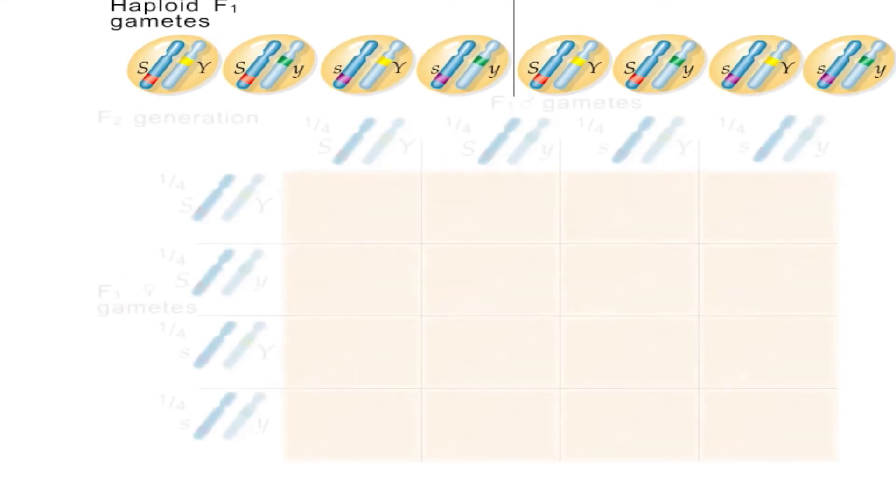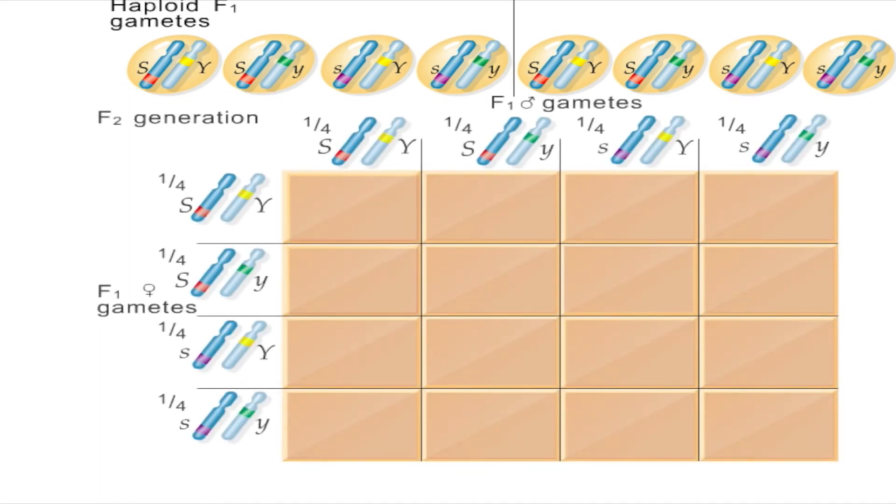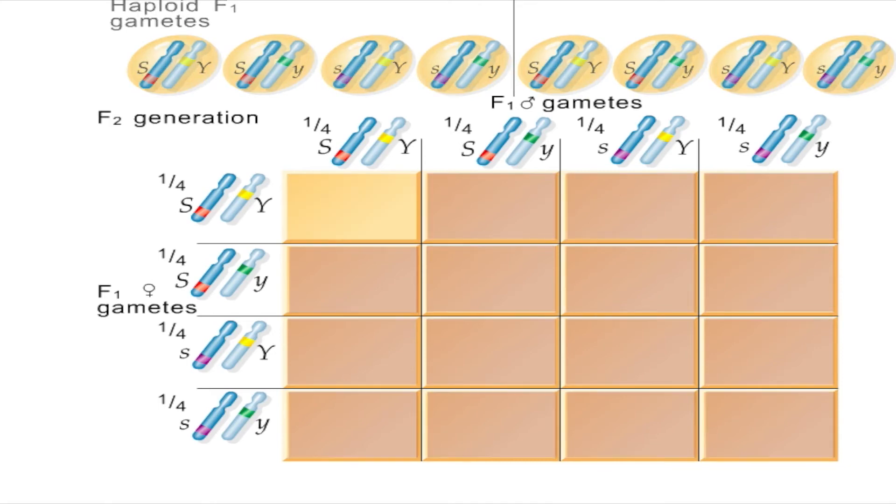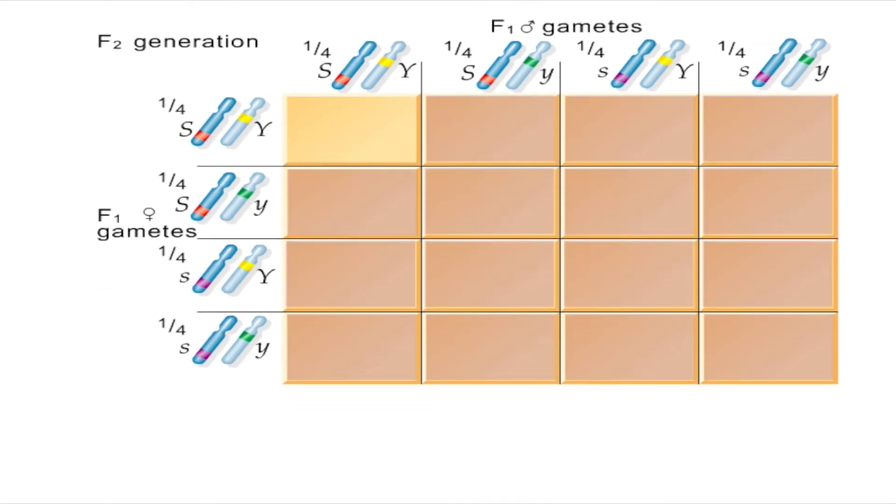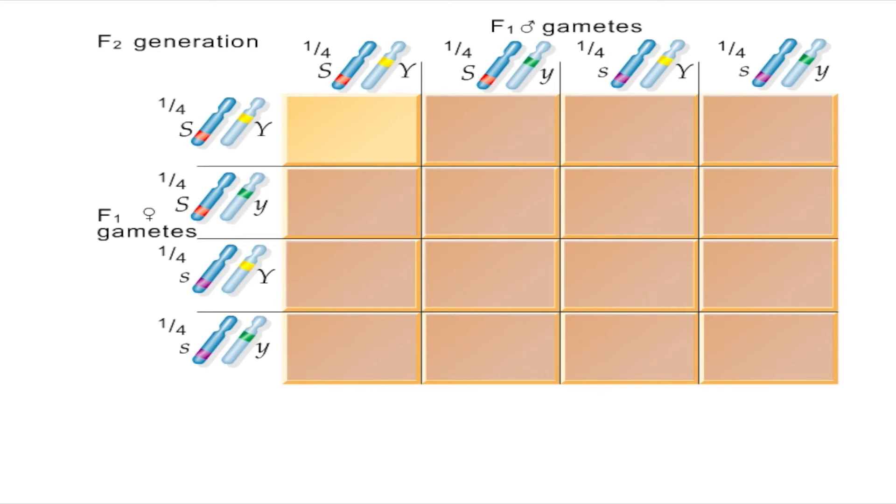If the F1 generation was self-crossed, each parent makes these four types of gametes in equal proportions. The resulting combinations of alleles in the F2 generation can be seen using a Punnett square.